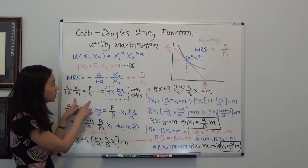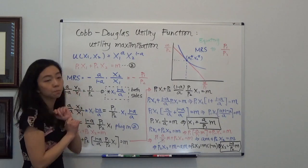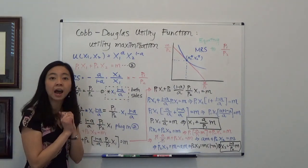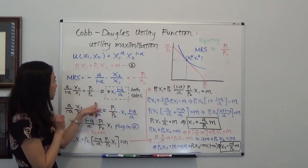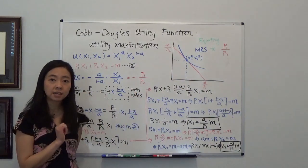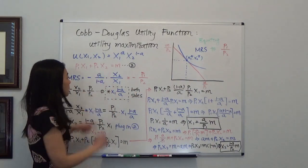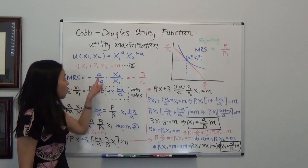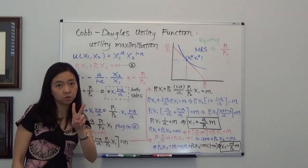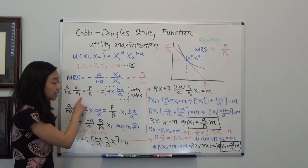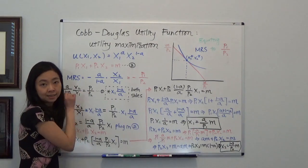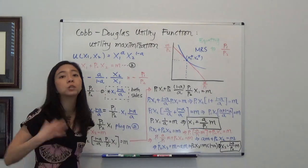Our equation 1, which is equating our marginal rate of substitution to the slope of our budget line, that's equation 1. Equation 2 is our budget constraint. With these two equations, we have two equations and two unknowns. The unknowns are x1 and x2, and that's the optimal consumption bundle we're trying to find.